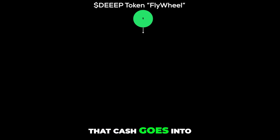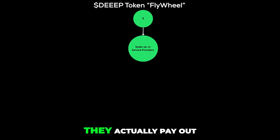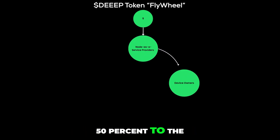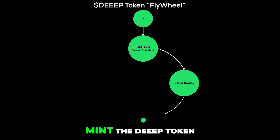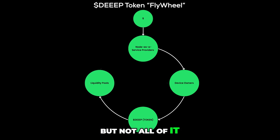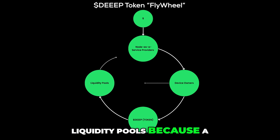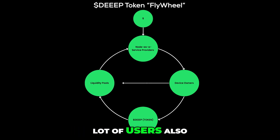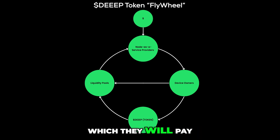What we have designed is what we call the flywheel effect. We have real cash that comes into the ecosystem from customers. That cash goes into the node-as-a-service providers that are in the network. They actually pay out 50% to the device owners, so the device owners mint the Deep token. And yes, some of that will leave the ecosystem, but not all of it — a lot of it will go back to liquidity pools.